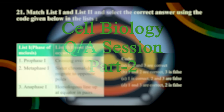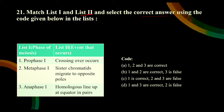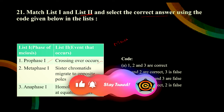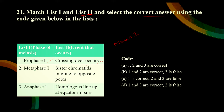The next question is to match list 1 and 2 and select the correct answer using the code given below. So we have to find the correct matches. First, let's take Prophase I - crossing over occurs. Yes, obviously in meiosis. These are the events taking place in meiosis 1. In the pachytene phase, crossing over occurs, so the first thing is correct.